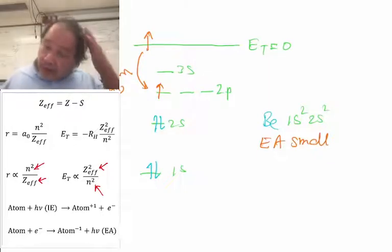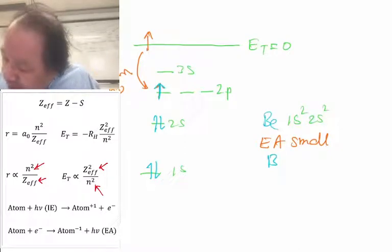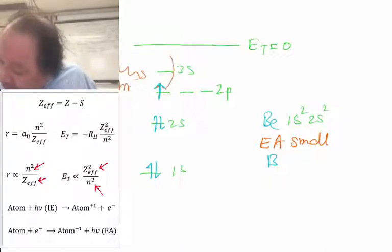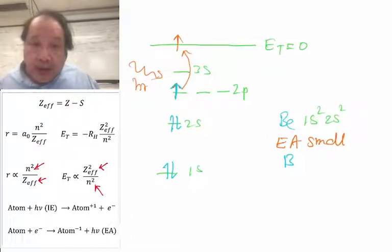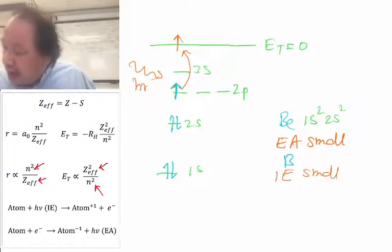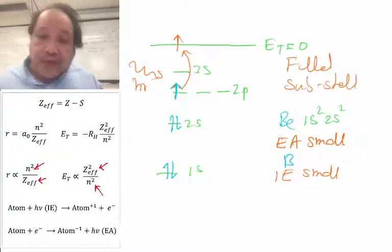And similarly, we could look at the next element in the periodic table, boron, which has one more electron. If light were to come in and release that electron, it doesn't have far to travel. And that means boron has a small IE. And this is the filled sub-shell.